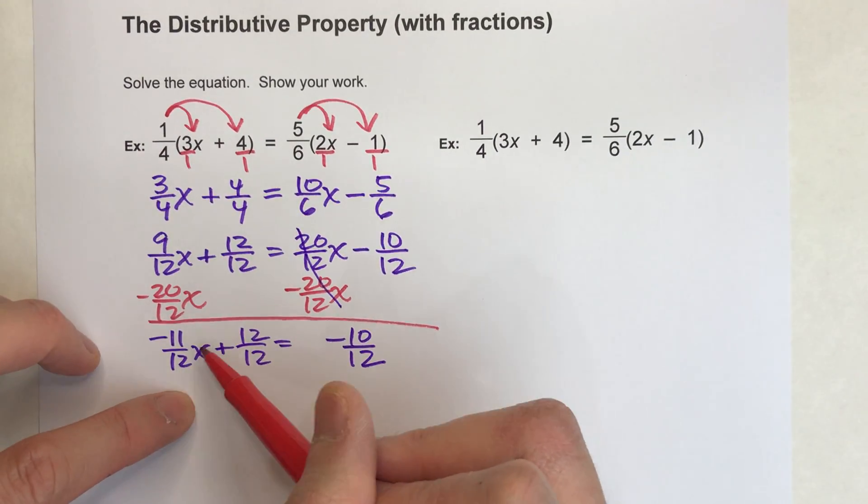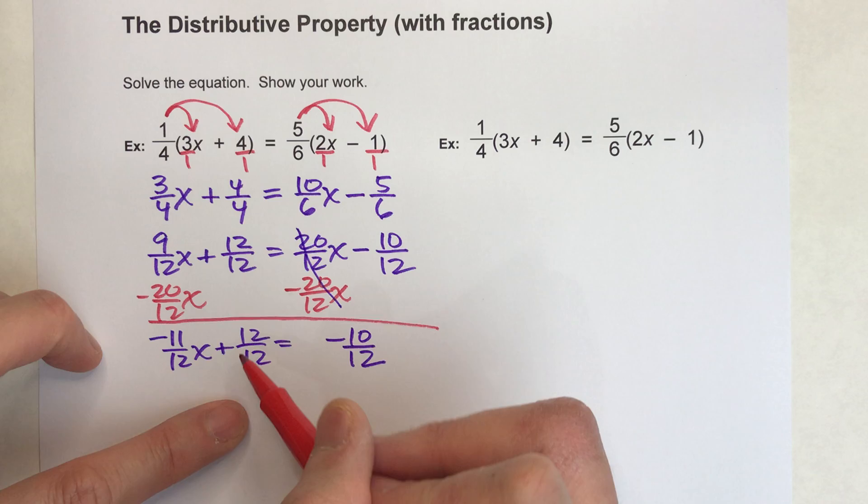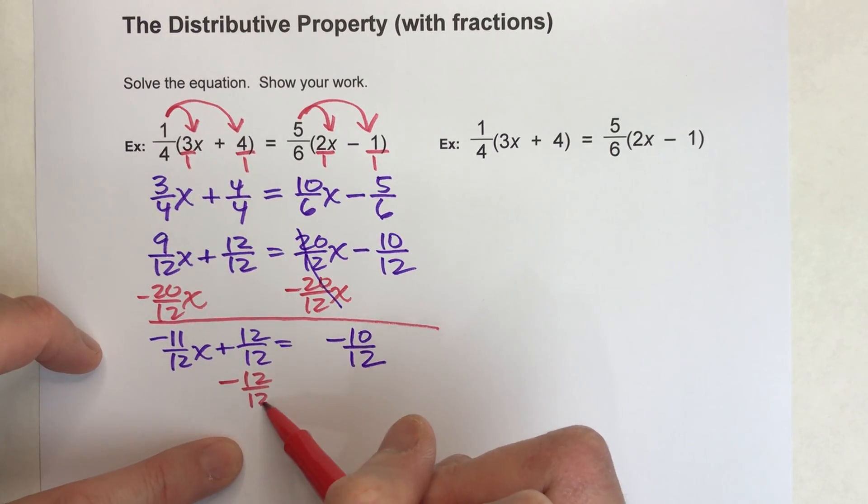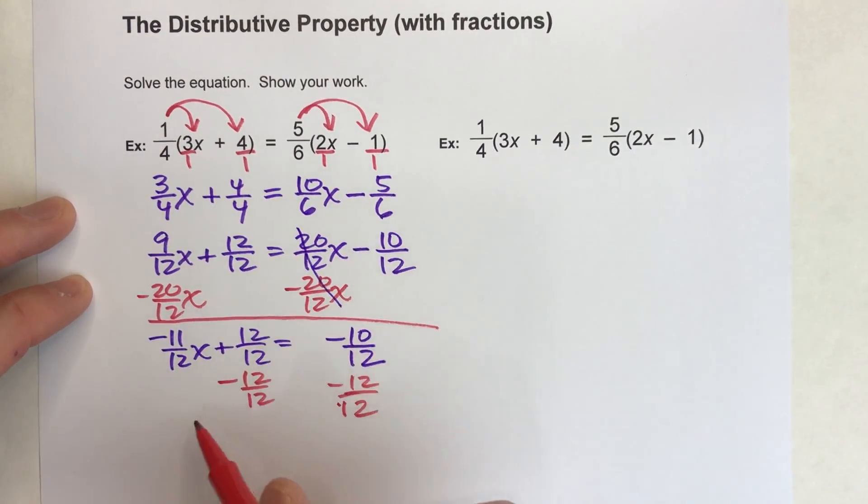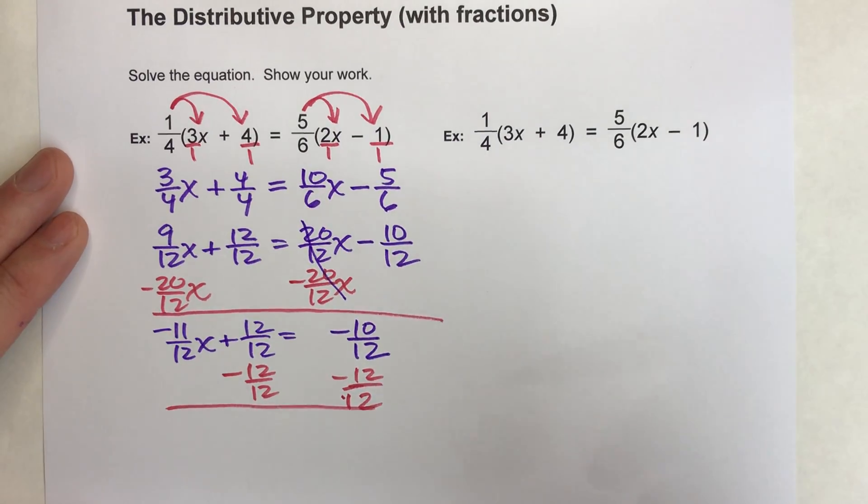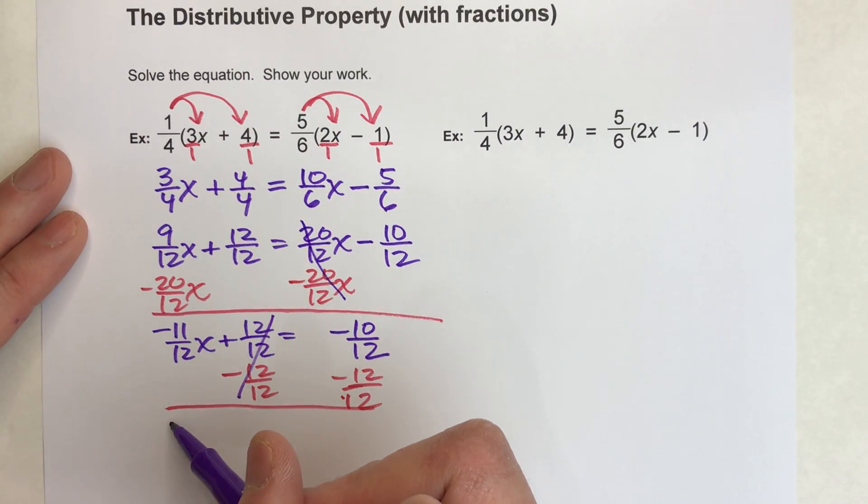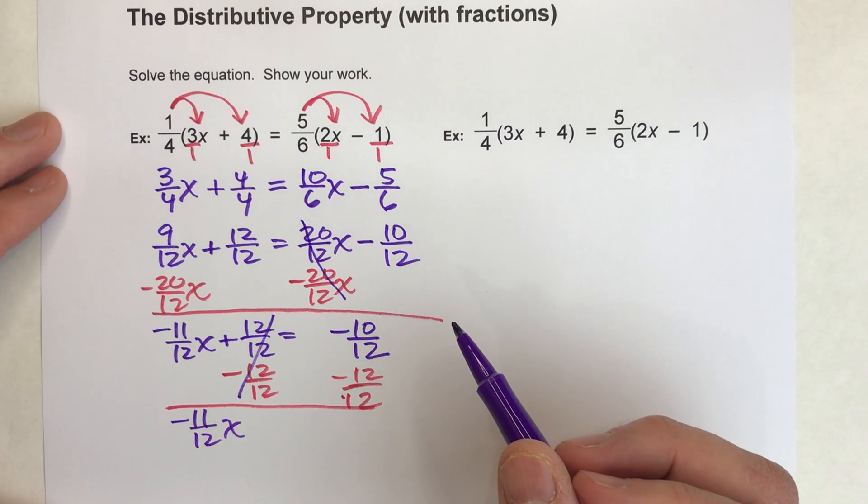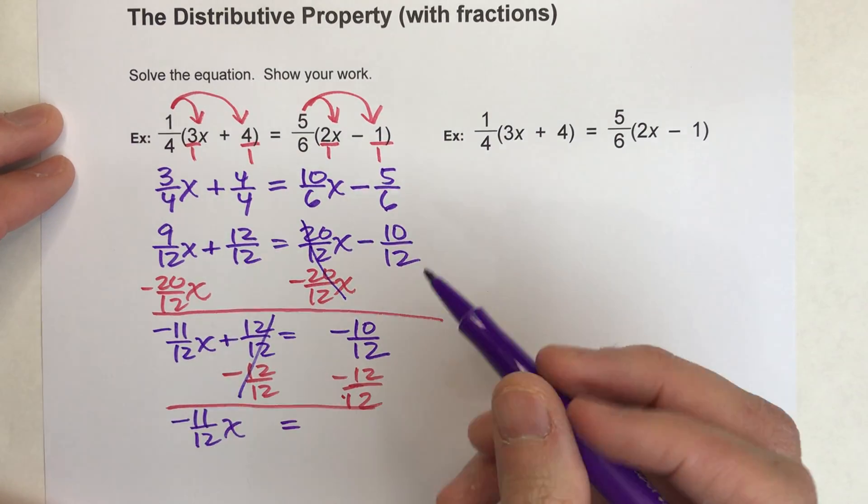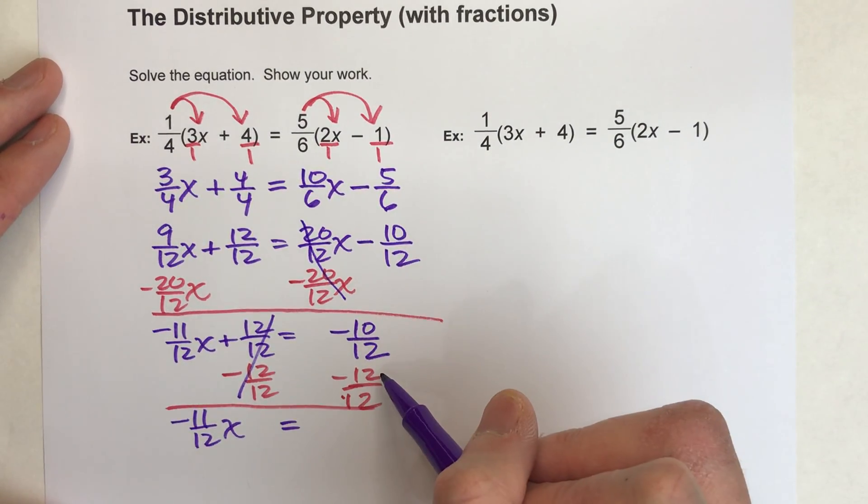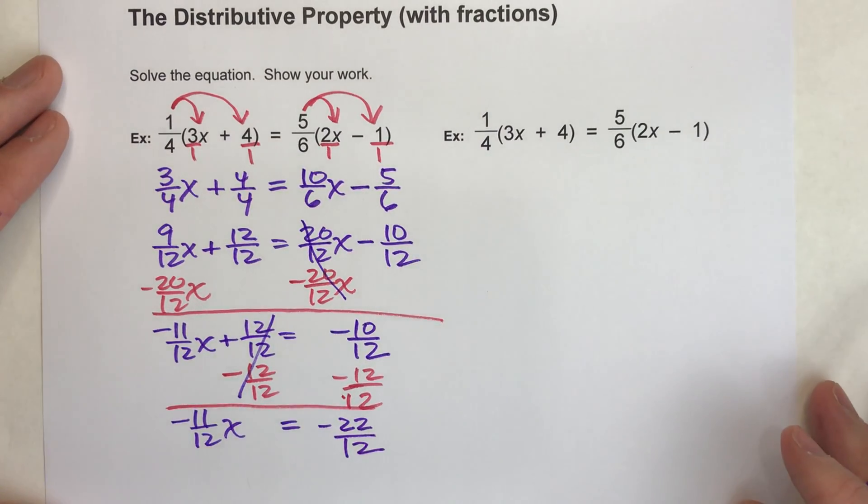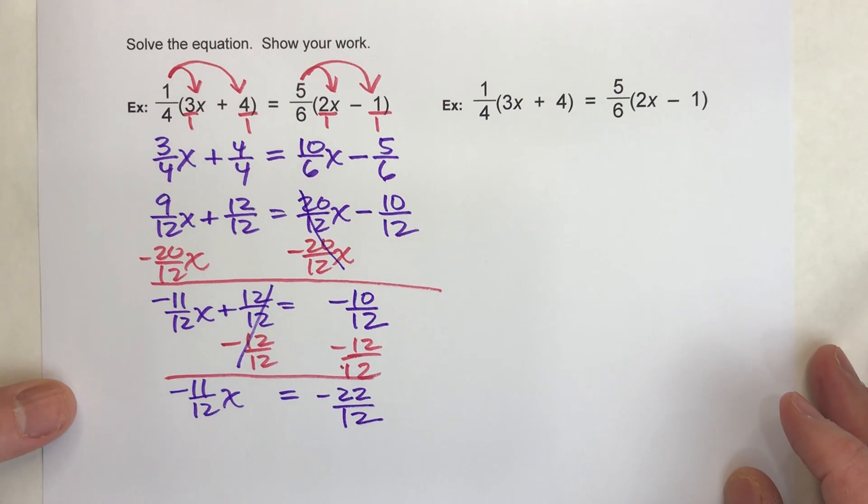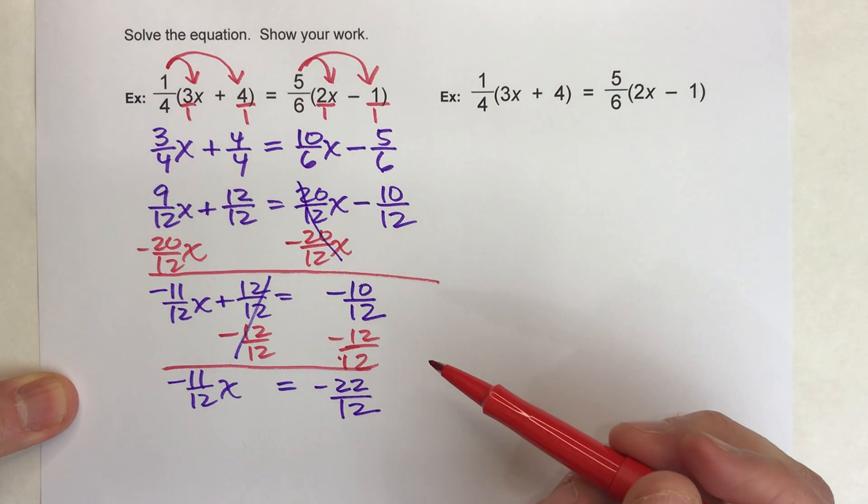Okay, now let's solve for x. So we've got to undo everything around x, so I'm going to subtract 12/12 from both sides. Alright, now when I do that, these undo each other, I get -11/12x drops down, equals drops down, and -10/12 minus 12/12 is -22/12, which can be reduced, but we'll just keep going with it.